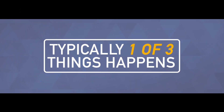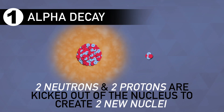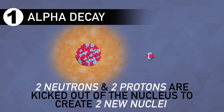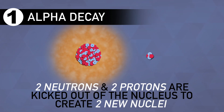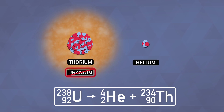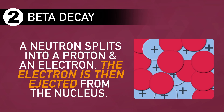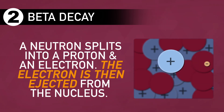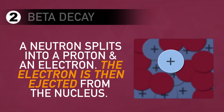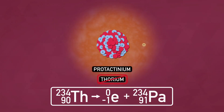Typically, one of three things happens. Alpha decay is when two neutrons and two protons are kicked out of the nucleus to form two different species: a helium nucleus and a totally different element than the one we started with. In this case, uranium ejects the alpha particle and becomes thorium. In beta decay, a neutron splits into a proton and an electron, and the electron is ejected from the nucleus. Because this changes the number of protons in the nucleus, a new element is formed. In this case, thorium becomes protactinium.